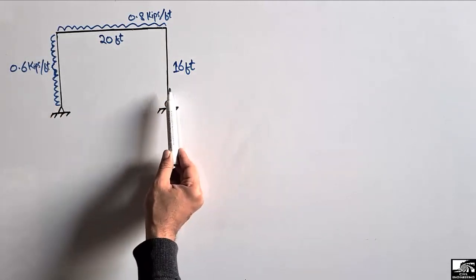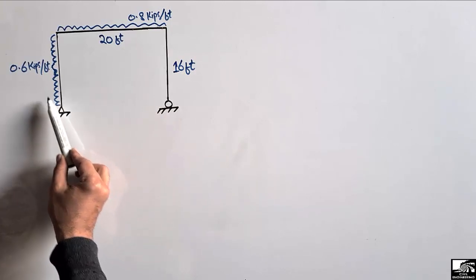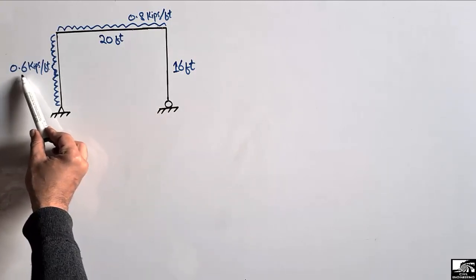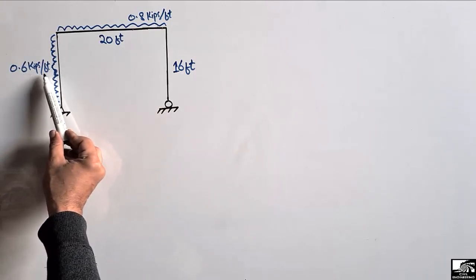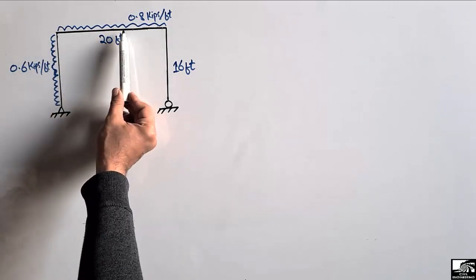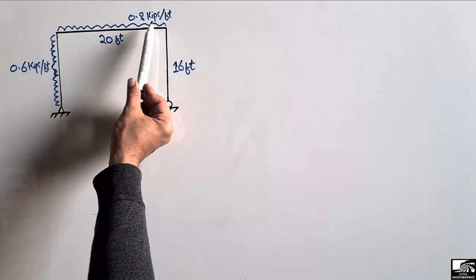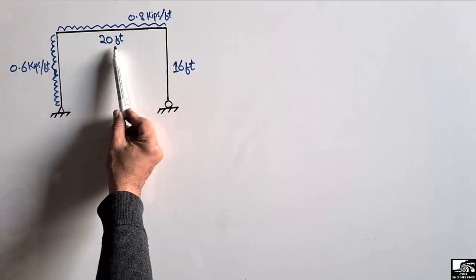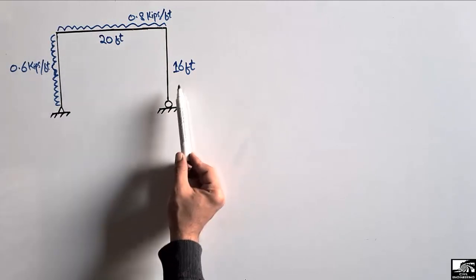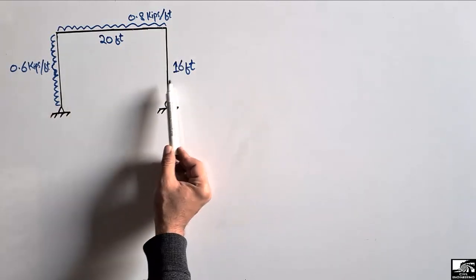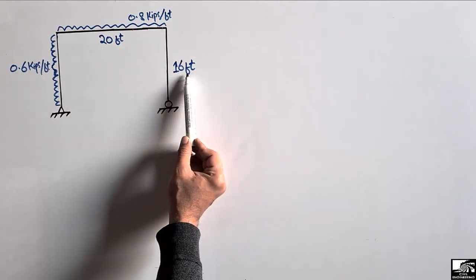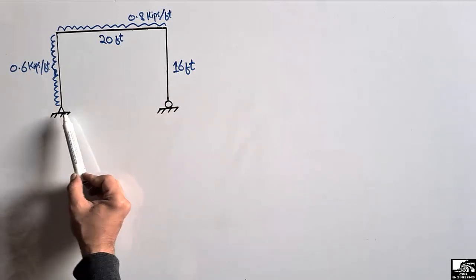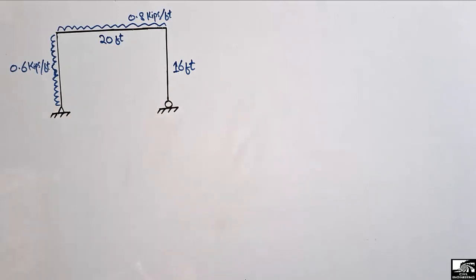This column has a lateral load of 0.6 kip per foot, and this beam has a distributed load of 0.8 kips per foot. The beam length is 20 foot, and both columns have the same length of 16 foot. This is a hinge support and this is a roller support.